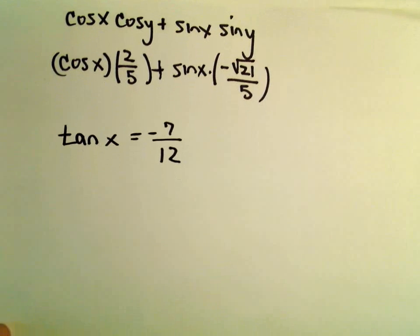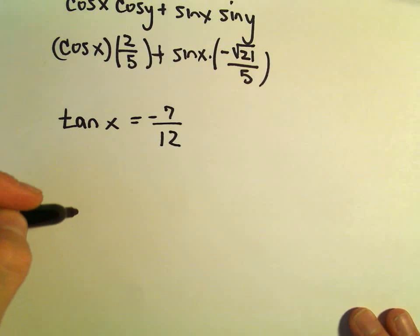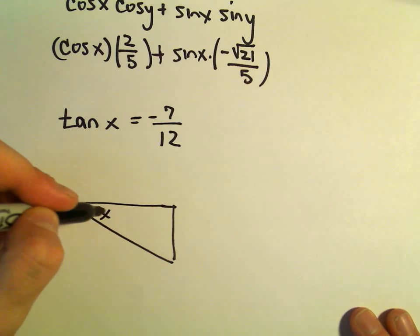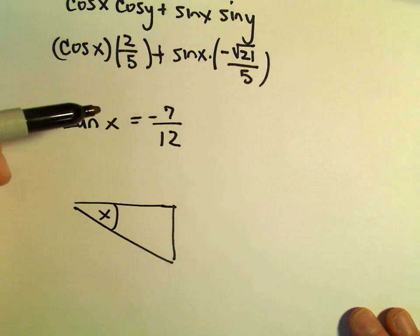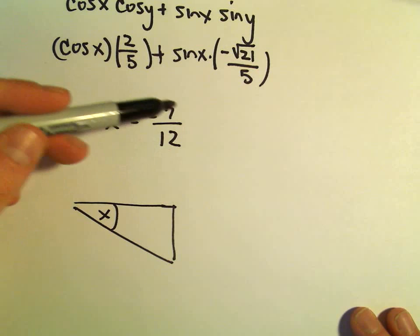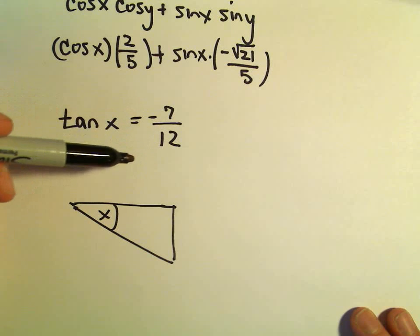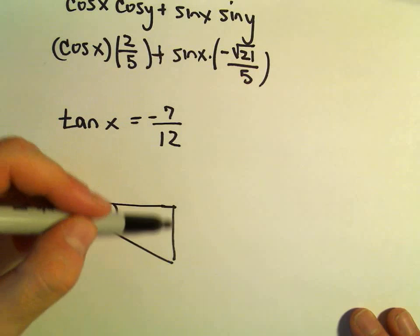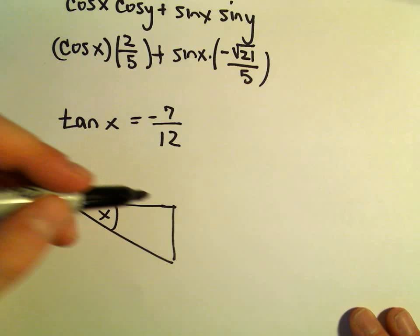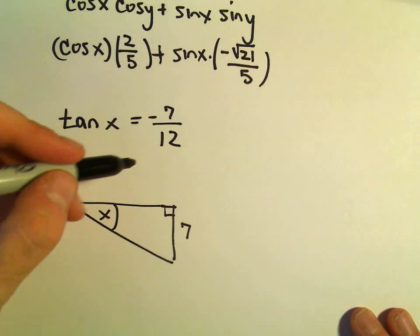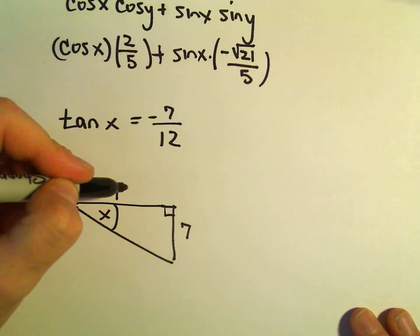What I'm going to use is a little right triangle. So here's our angle x. One of these are negative, but that's simply because our angle's in quadrant 4. When you make your right triangle, just label everything with positive lengths. So tangent is opposite, which is 7, over adjacent, which is going to be 12.